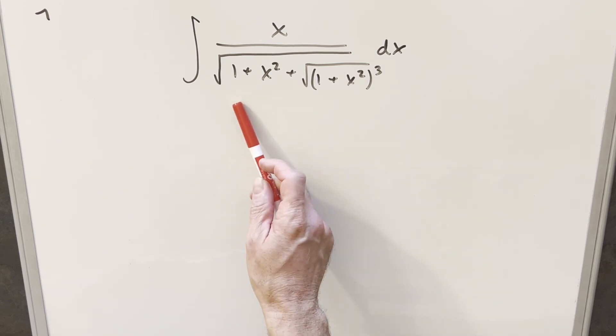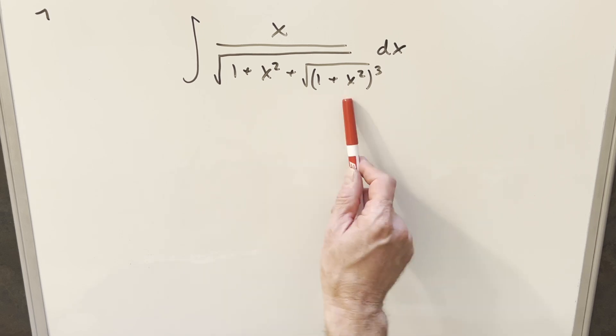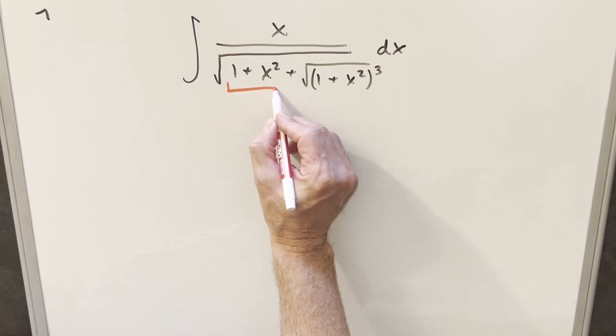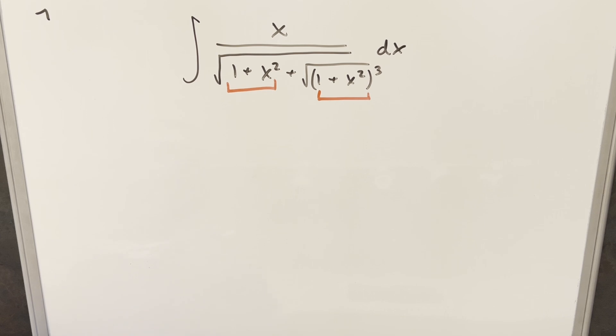First I was pretty concerned with this. We've got like a nested square root here. This looks pretty complicated. The only thing that makes me optimistic is we've got the same thing right here and here. We've got 1 plus x squared.